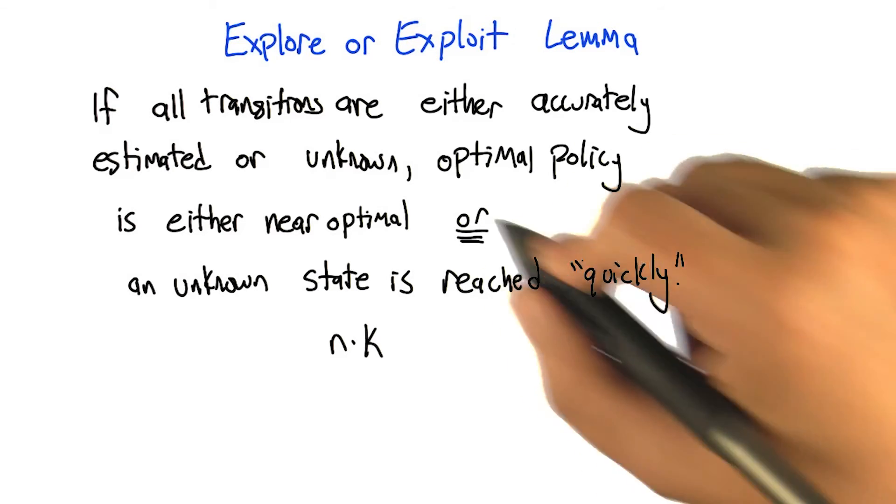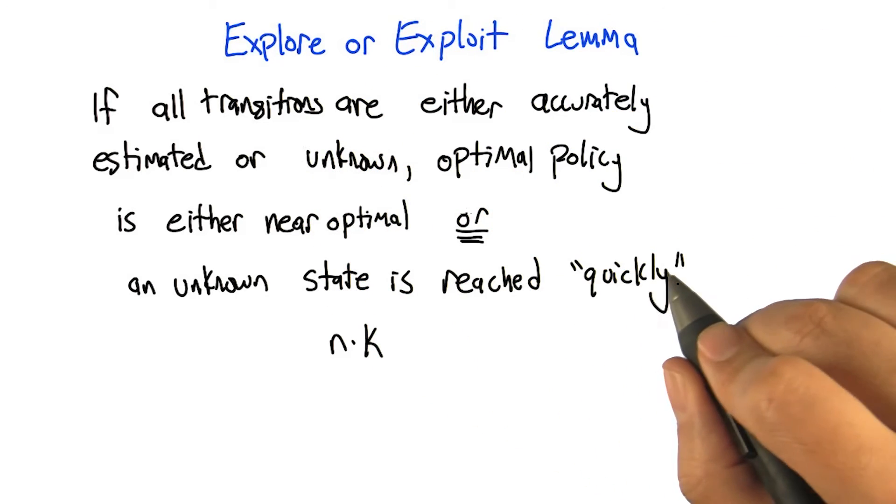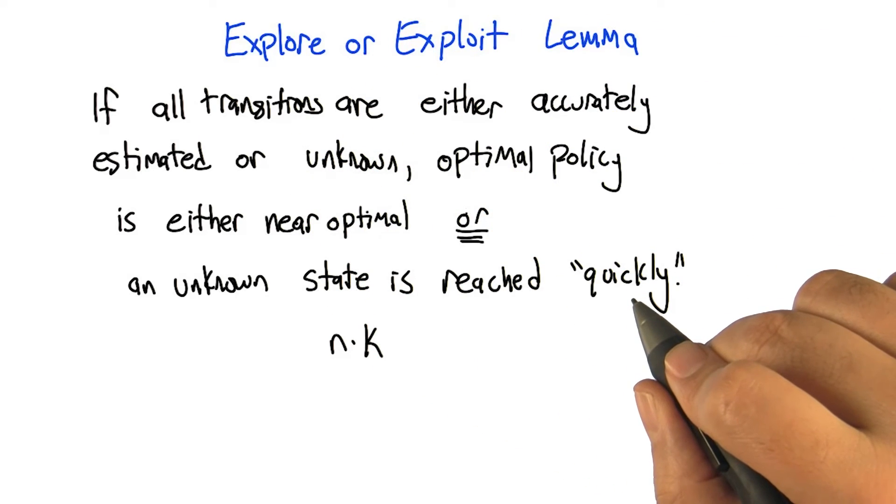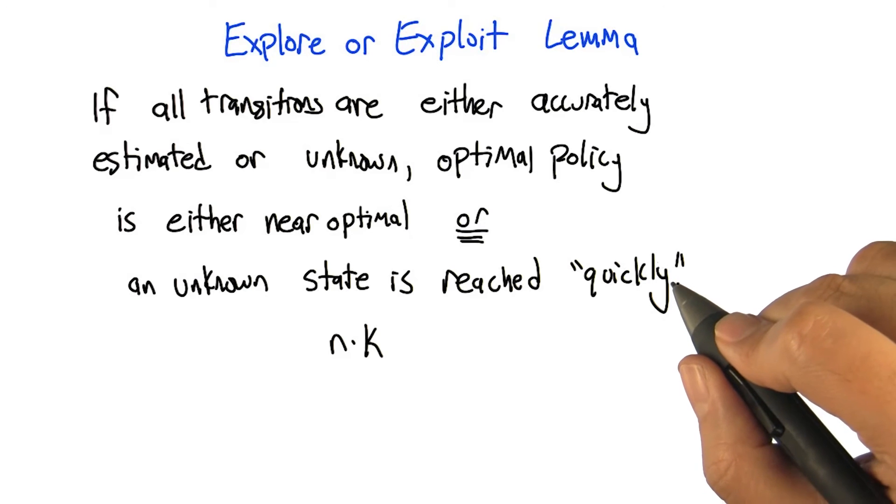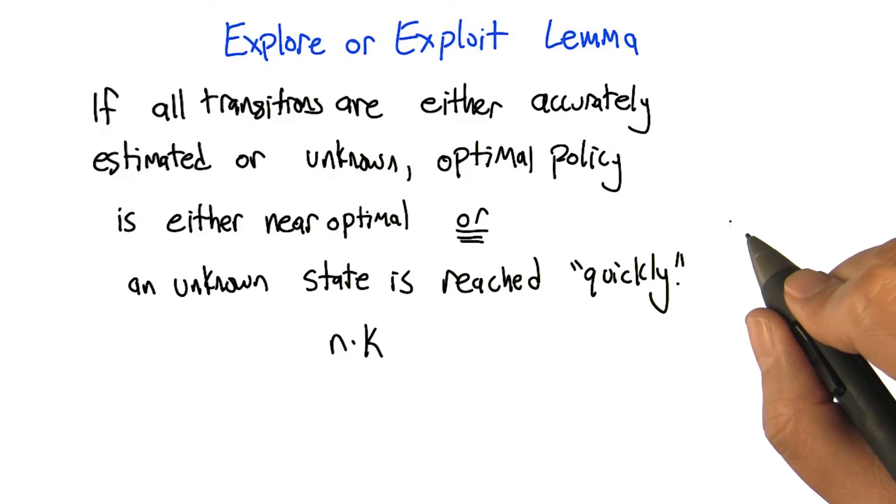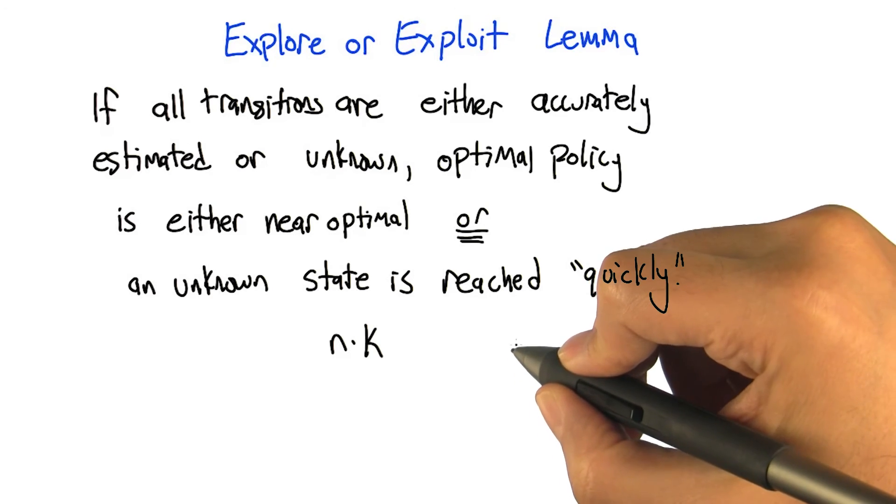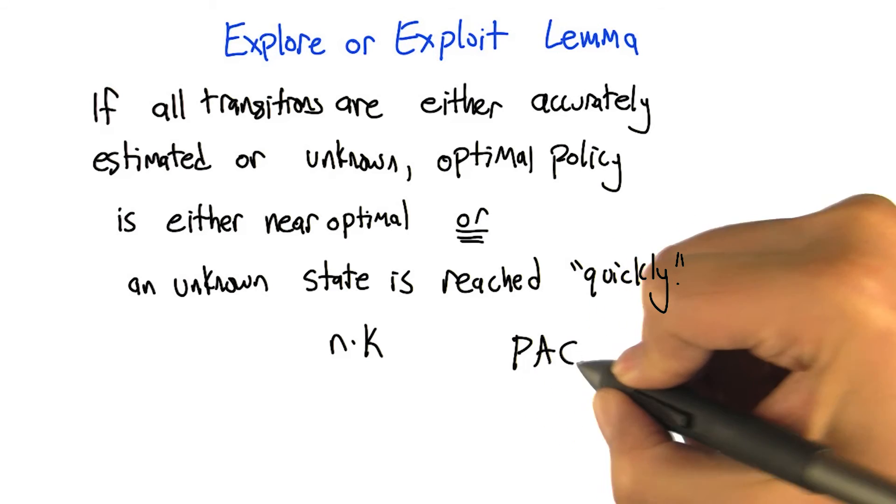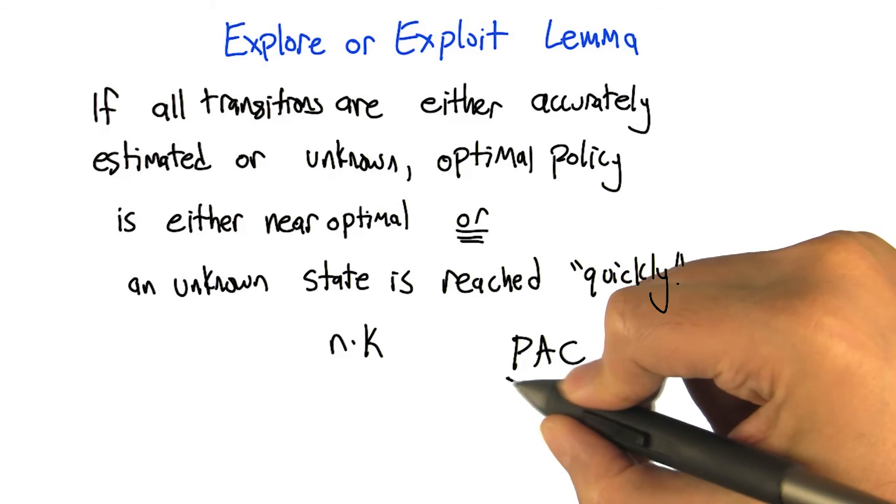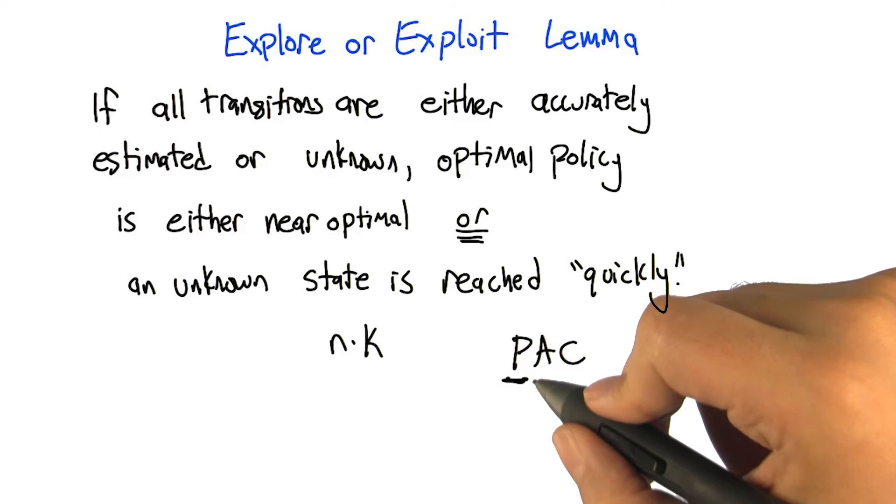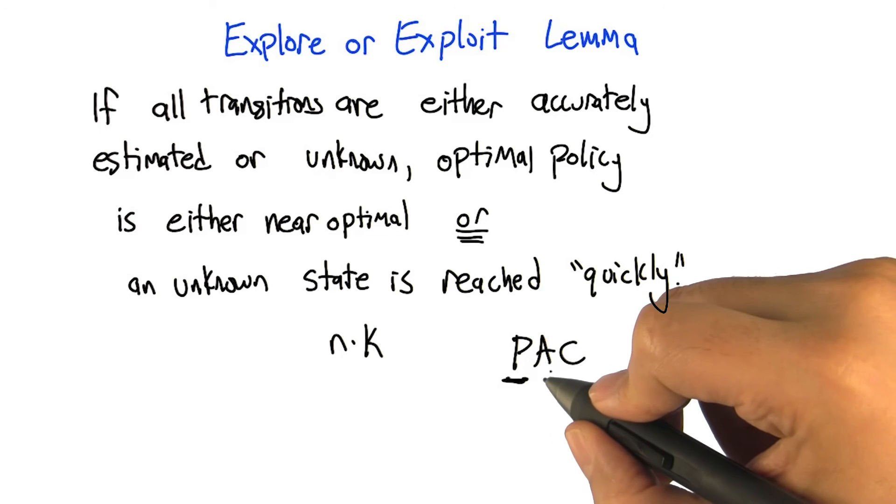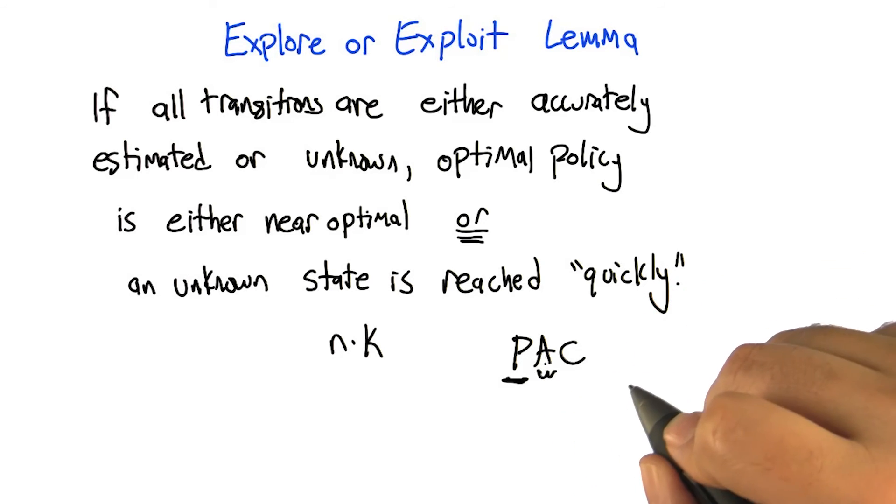And what this lemma is about is showing that, in fact, the bad case doesn't happen. Either we're learning something or we're doing very well. And that could only not happen if we were incredibly and extremely unlucky. But if we were incredibly and extremely unlucky, then you couldn't learn anything anyway. And that's back to this sort of PAC notion that it's probably going to work. At least approximately. Yeah, that's right. And working is here related to approximately.